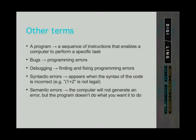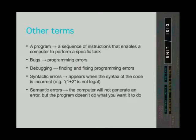Programs are a sequence of instructions that enable a computer to perform a specific task. Bugs are programming errors found in our code, while debugging is the process of finding and fixing these errors. Errors can be syntactic or semantic errors. Syntactic errors are when the syntax of the code is incorrect — for example, if we forget to close a bracket when writing an expression like (1 + 2. This is not legal in Python; every open bracket must be closed.